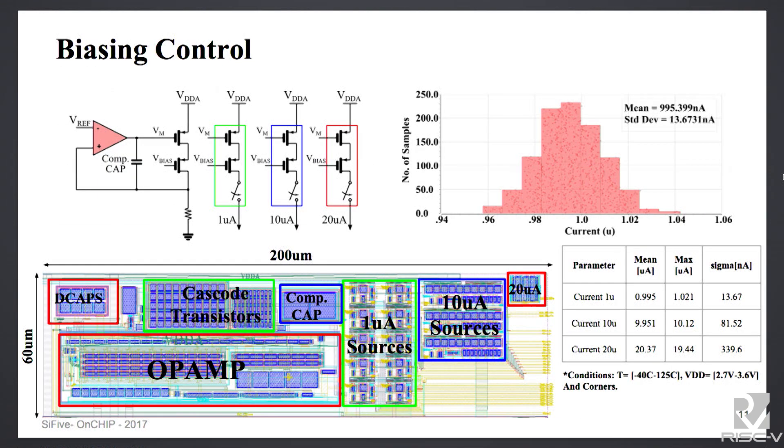We also have the biasing control circuitry. This biasing control circuitry is used for the power management unit, where you can turn on and off a lot of the analog blocks. We are showing that we have a 3-sigma value of around 2.3 to 2.4 percent. We have different current sources available.